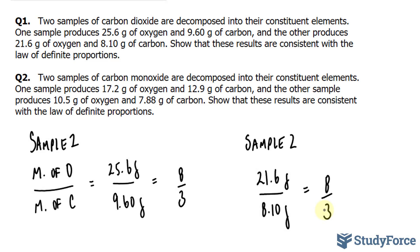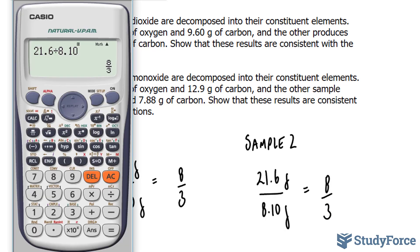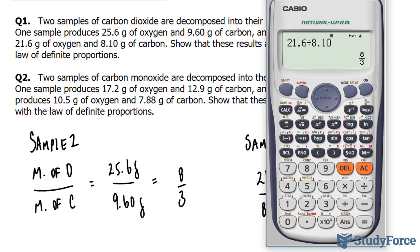Once again, we'll be using the exact same logic as in question one. And without doing any writing, I'll just show you on the calculator. We have 17.2. I'm going to divide the mass of oxygen over the mass of carbon. And I should also get 4 over 3 for the next sample. 10.5 divided by 7.88. This gives us the following, which is equivalent to 1.33. Now, if I divide 4 over 3 and find its decimal number, I also get 1.33.